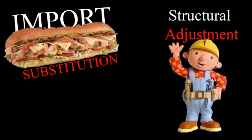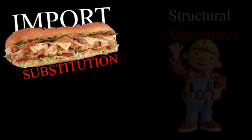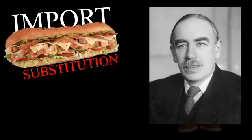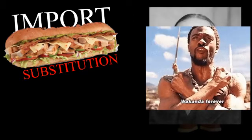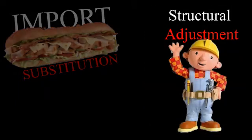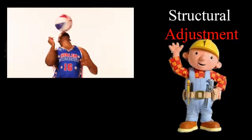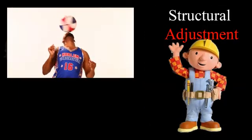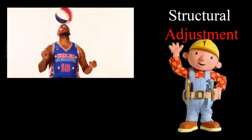These two theories are often in competition with one another. Import substitution is more geared towards the Keynesian school and espouses nationalism to a degree, while structural adjustment favors more globalization and neoliberalism, more in line with the Chicago school of thought.